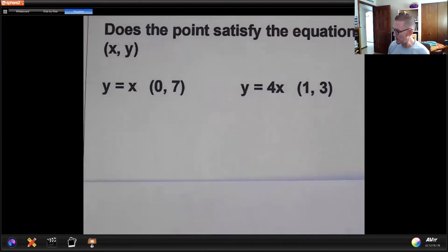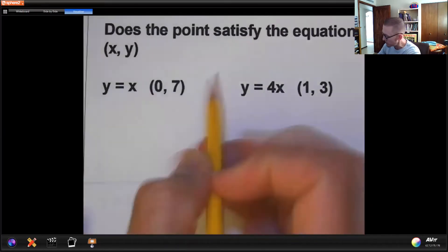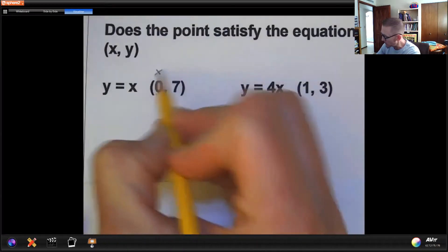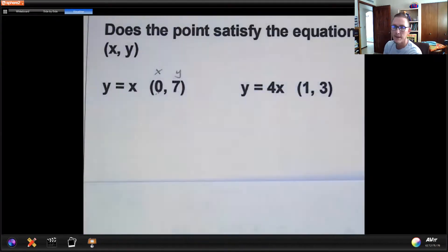Well, if we look at the first example, it says y equals x. So this is a pretty basic equation. And then it wants to know, does this point satisfy the equation? Well, this is x and this is y. In order for it to satisfy the equation, when you plug in, it has to balance and make a true statement at the end.